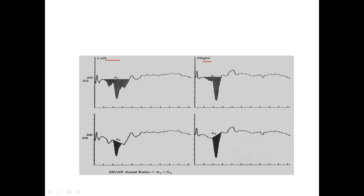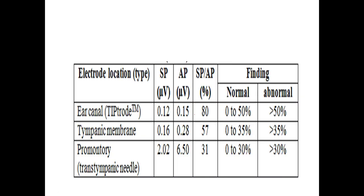The width and area under the curve of the SP-AP complex are used as measurement parameters. A1 represents the entire SP-AP area and A2 represents only the action potential area, giving the A1/A2 ratio. The normal threshold using field growth is 0.12, and the action potential is 0.15. These are the parameters used for analysis.